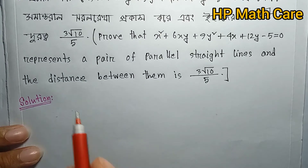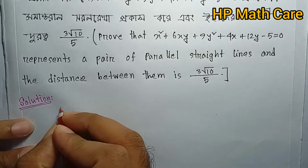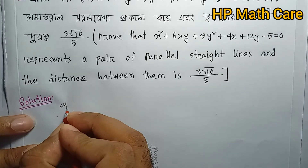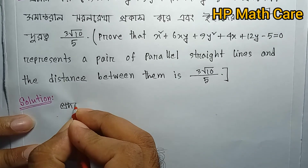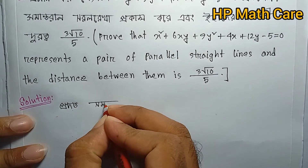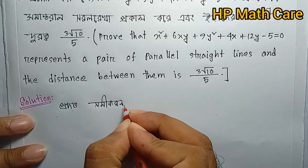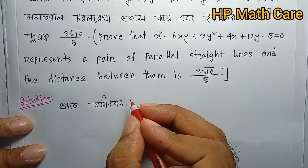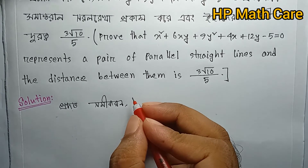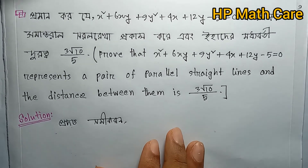So the equation we are working with is: x squared plus 6xy plus 9y squared plus 4x plus 12y minus 5 equals zero. Let me go through this carefully.